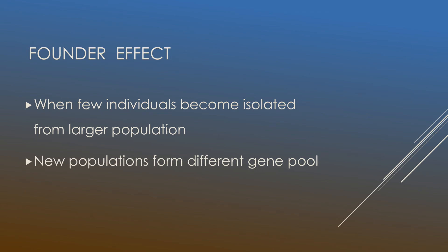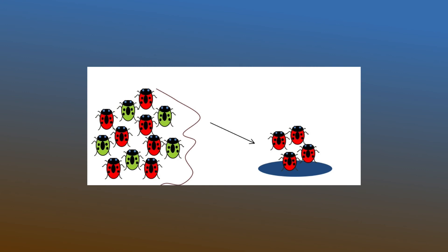The next effect we're going to talk about is the founder effect. This occurs when a few individuals become isolated from a larger population. The new isolated population will have a different gene pool than the original. For instance, starting with a population of red and green ladybugs, after an event occurs a new population is established consisting of only four red ladybugs. This new population has a drastically different gene pool than the original population from which it descended — a classic example of the founder effect.